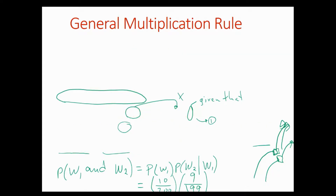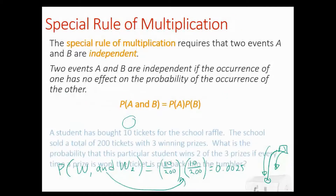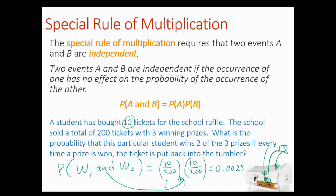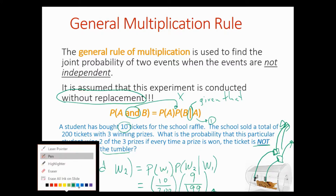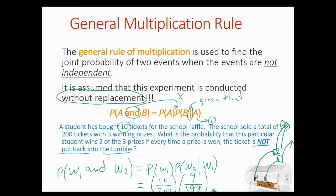In the previous example you had 10 divided by 200 times 10 divided by 200. On this one we have 10 divided by 200 times 9 divided by 199. We have reduced the number of tickets we had by one, and we also reduce the total number of tickets by one as well.